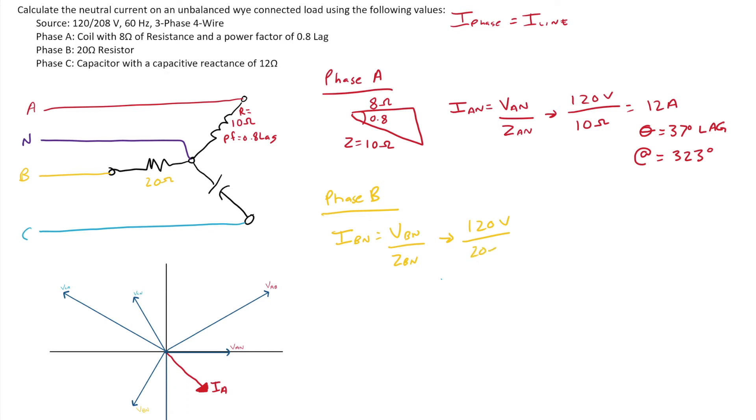And we were told that that was 20 ohms, which gives us six amps with a phase angle of zero degrees. Resistor current and voltage are in phase with each other. And that gives us a phaser angle. Again, this is based off of VB to N, which would mean that my phaser would be right there on top of VB to N down on my phaser diagram. That would be IB. It would be in phase with the phase voltage. So that puts it right at 240 degrees.